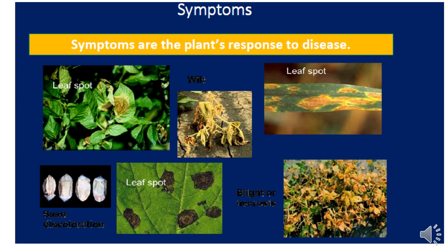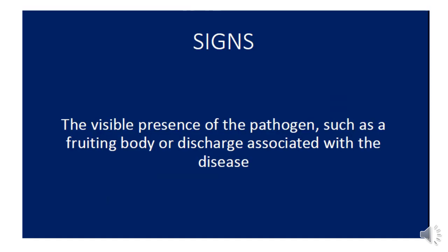This slide shows photos of the symptoms explained previously. On the left of the slide, you can see some spots on potato. In the middle, you can see wilting of the plant. On the top right, you can see leaf spots. You can also see blight as a general leaf die-off in a short time on the bottom right. In the middle, you can see fruit spots, and on the bottom left, you can see some seed discoloration, which could result from dead tissue like necrosis.